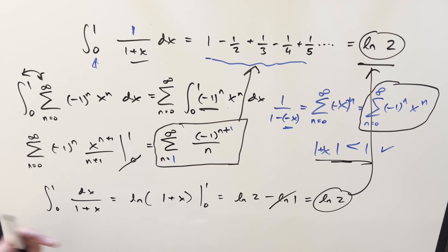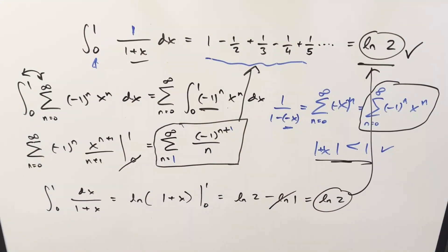And so by doing the integral two different ways, we show that the alternating harmonic series is just equal to natural log of 2. Okay, there you go. That's it for today. Thanks everyone for watching. Have a good day.